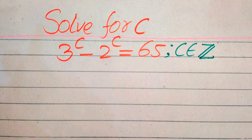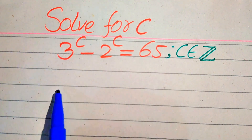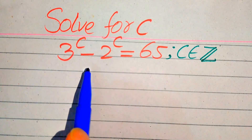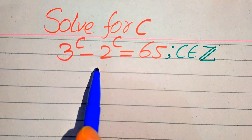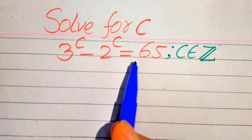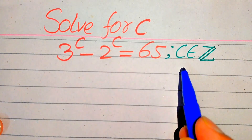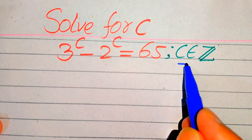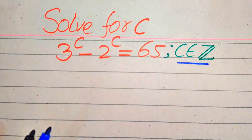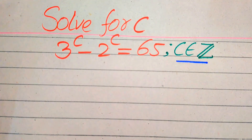Hello everyone. How to solve this problem for the values of c, if we have 3 to the power of c minus 2 to the power of c equals 65, and we solve this problem for the values of c. Here you remember one thing: c must belong to integers, meaning we find only integral values of c.